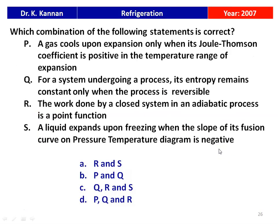The next question is from the 2007 question paper. Which combination of the following statements is correct? P: A gas cools upon expansion only when the Joule-Thompson coefficient is positive in the temperature range of expansion. Q: For a system undergoing a process, entropy remains constant only when the process is reversible. R: The work done by a closed system in an adiabatic process is a point function. S: A liquid expands through freezing when the slope of its fusion curve on the pressure-temperature diagram is negative. The correct answer is R and S.